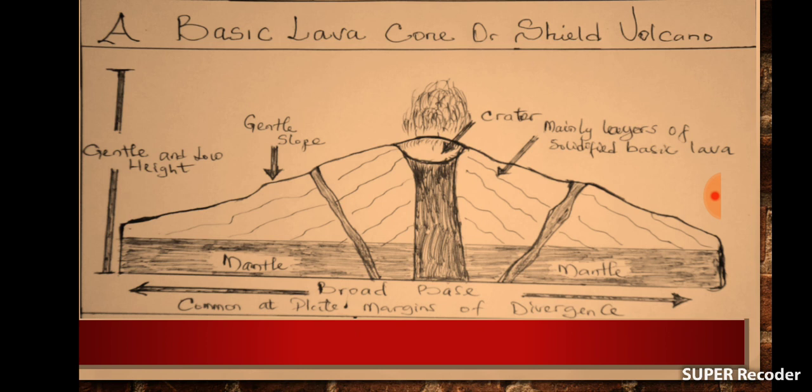Unlike the acidic lava cones which are formed at plate margins of convergence, the basic lava cones are more common around plate margins of divergence where plates actually drift away from each other, as we can see by the arrows at the base of the volcano. Since this is very common around Hawaii, it is always referred to as the Hawaiian type of volcano.